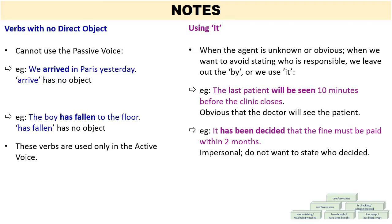One more note: when we don't know the agent, or if the agent or the person doing the action is obvious, or when we want to avoid stating who is responsible for the action, we may leave out the 'by,' or we might use the impersonal 'it.' For example, in the sentence: The last patient will be seen ten minutes before the clinic closes — it's obvious that it is the doctor who will see the patient, so we don't mention the agent and say 'by the doctor.' Another example: It has been decided that the fine must be paid within two months — we use the impersonal 'it,' as we may not want to state who decided this.